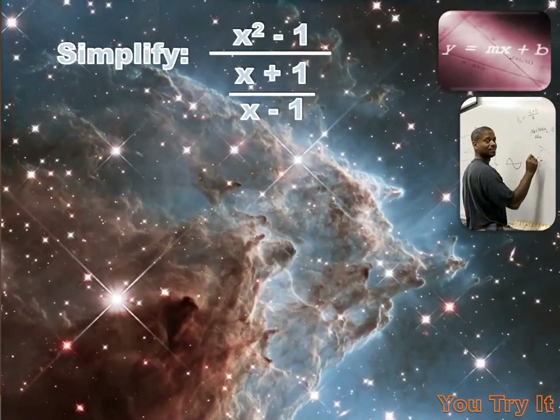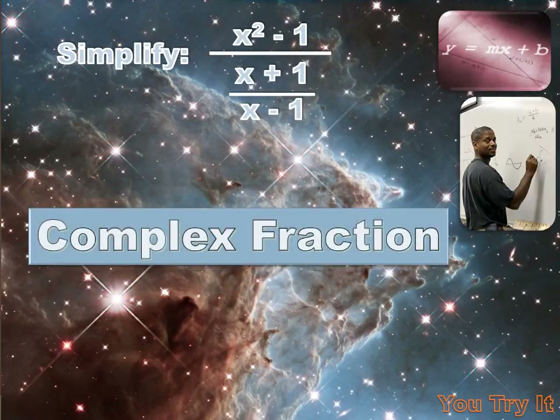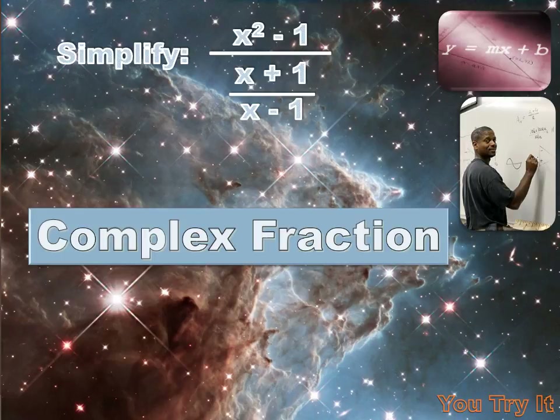Can you simplify this expression: x squared minus x, divided by x plus 1 over x minus 1? We call that a complex fraction — a fraction that has a fraction in either the denominator or the numerator, or both. Hit your pause button, try the problem, and then hit your forward key to move on to my solution.